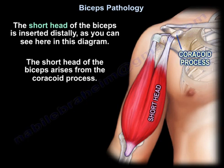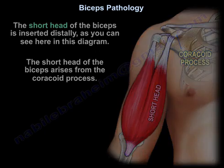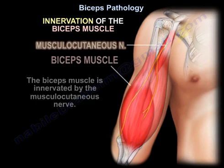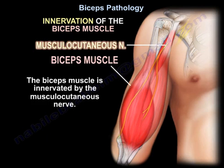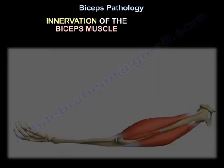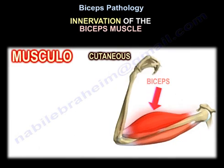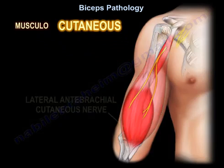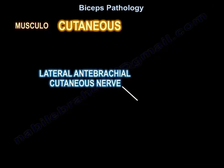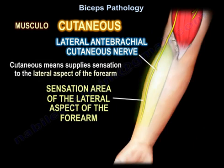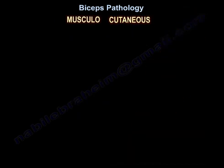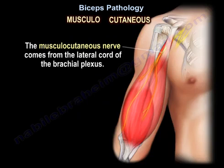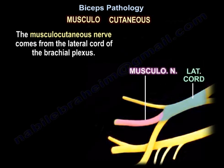The short head of the biceps arises from the coracoid process. Innervation of the biceps: the biceps muscle is innervated by the musculocutaneous nerve. The musculocutaneous nerve supplies sensation to the lateral aspect of the forearm, and it comes from the lateral cord of the brachial plexus.